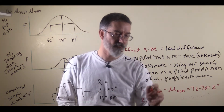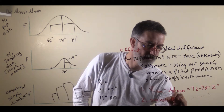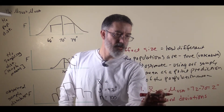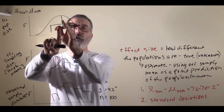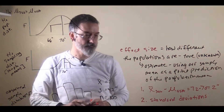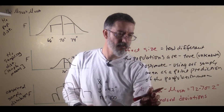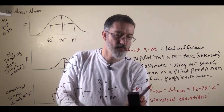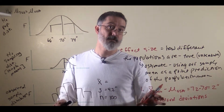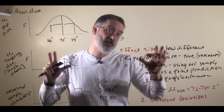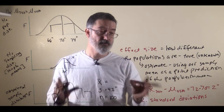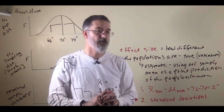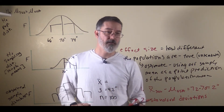A more common way of calculating effect size is in units of standard deviations — figuring out how many standard deviations our observed sample mean is on the population's distribution. This example works well because 2 inches taller is a meaningful unit. In practice, though, we use a lot of different kinds of variables. If we were measuring extroversion and comparing men and women, a difference of 2 is not very interpretable — what does a difference of 2 mean for extroversion? So it is more common in statistics to calculate an effect size in units of standard deviations.